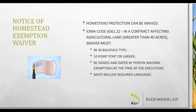The homestead exemption can be waived for ag land — specifically anything greater than 40 acres. Anything less than 40 acres falls under the previous section. For land greater than 40 acres, the waiver must be in bold-faced type, 10-point font or larger. It must be signed and dated by the person waiving the exemption at the time of execution. In your documents, this is where you'll see an extra signature line immediately following the waiver, in addition to the final signature line.